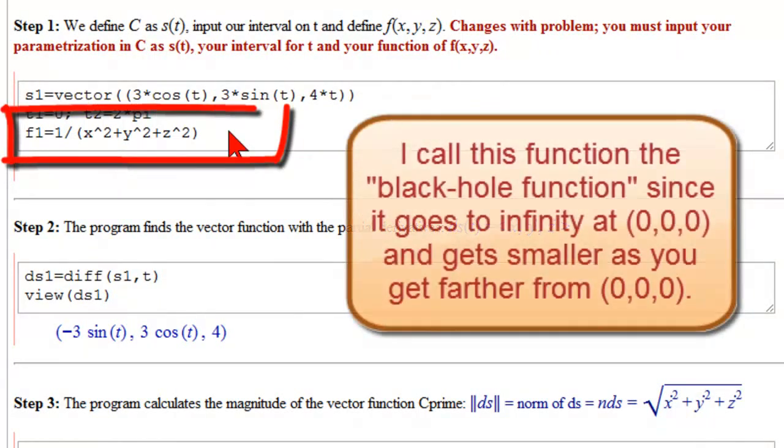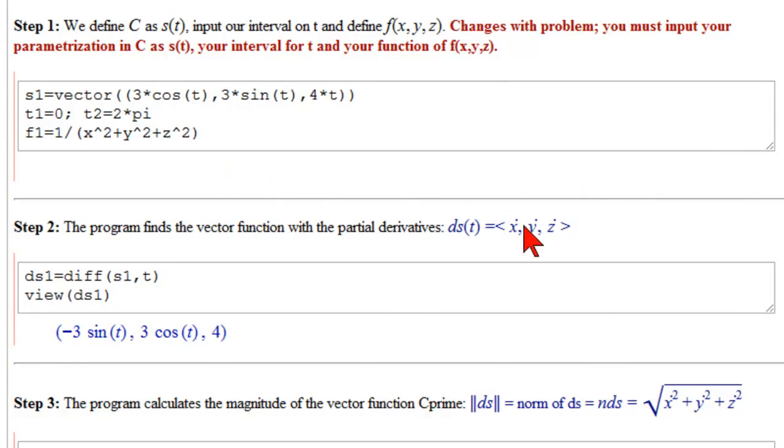Now I call this function the black hole function. Why do I call it the black hole function? Because at the point 0, 0, 0, this function goes to infinity. So its density at 0, 0, 0 is infinite. So I call it the black hole function, because at 0, 0, 0, it has infinite value. And then as you get farther and farther out from 0, 0, 0, the density drops very fast. The rest is the standard stuff.